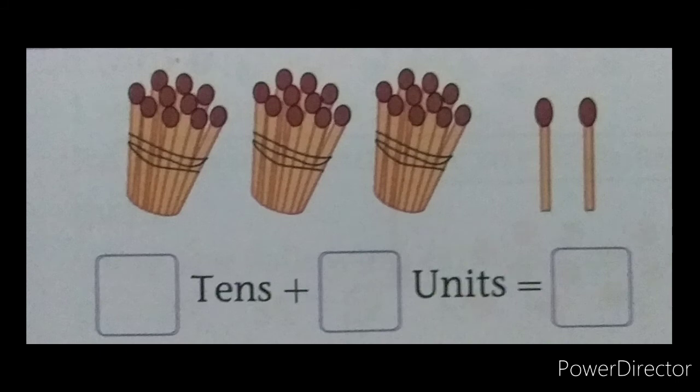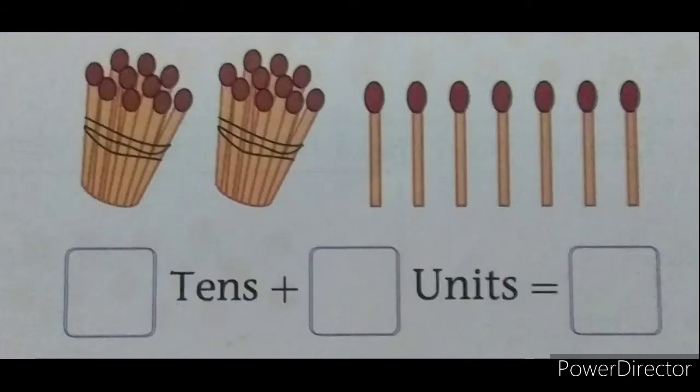Now, next: 3 tens and 2 units, 32. Now children, next example: 2 tens and 7 units, 27.